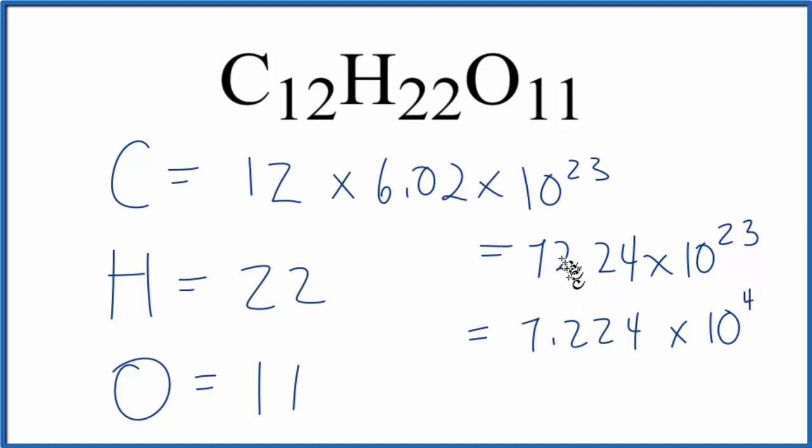So I reduced this by one decimal. I increased this by a decimal. So this is the number of carbon atoms in one mole of C12H22O11, sucrose or table sugar.